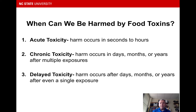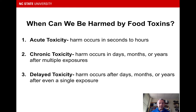When can we be harmed by different types of food-based toxins? There are acute toxicities that can occur almost immediately or within hours of consumption. There are chronic toxicities that may require repeated exposures before we come to any harm. And then there are delayed toxicities where we may experience harm months or years later after a particular exposure. So there's a very wide variety of ways in which food-related toxins can harm us.